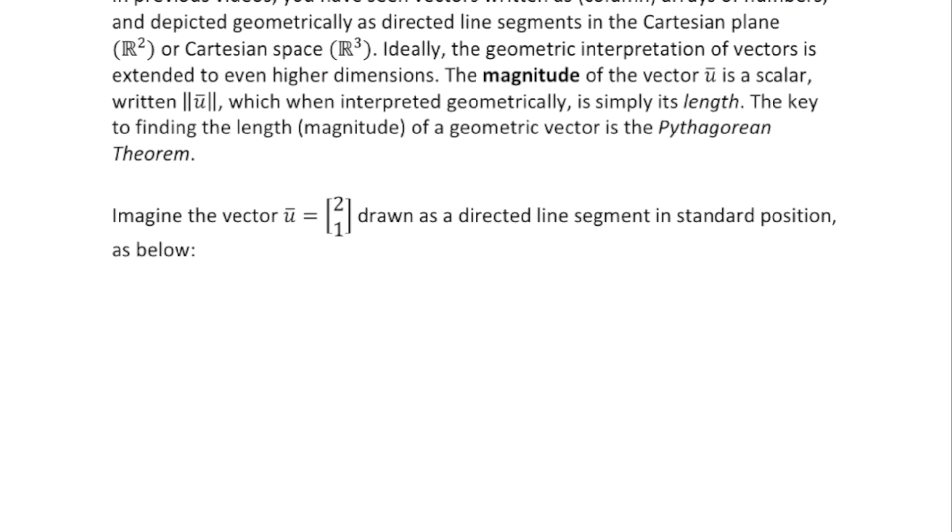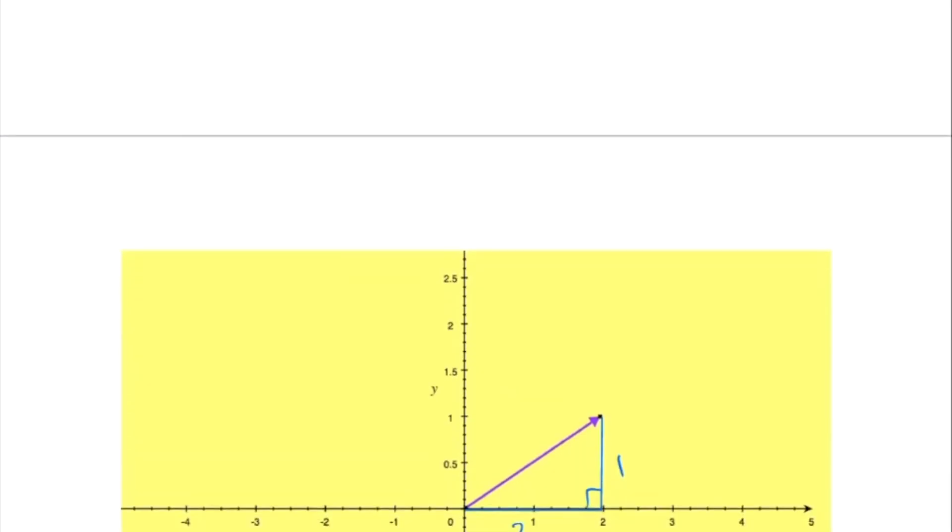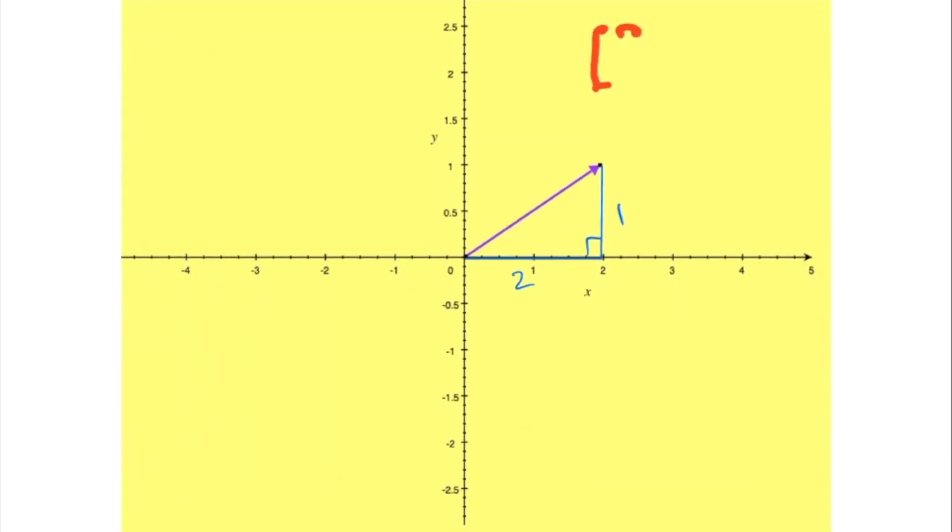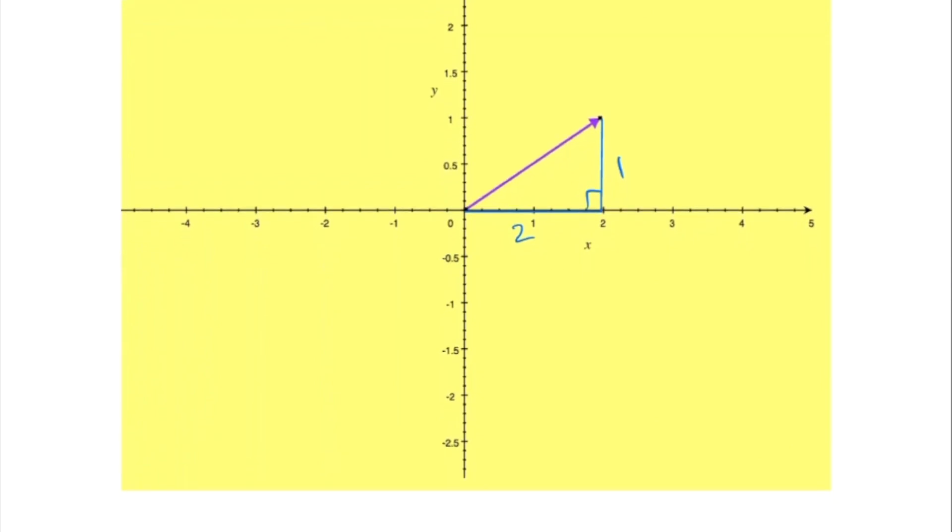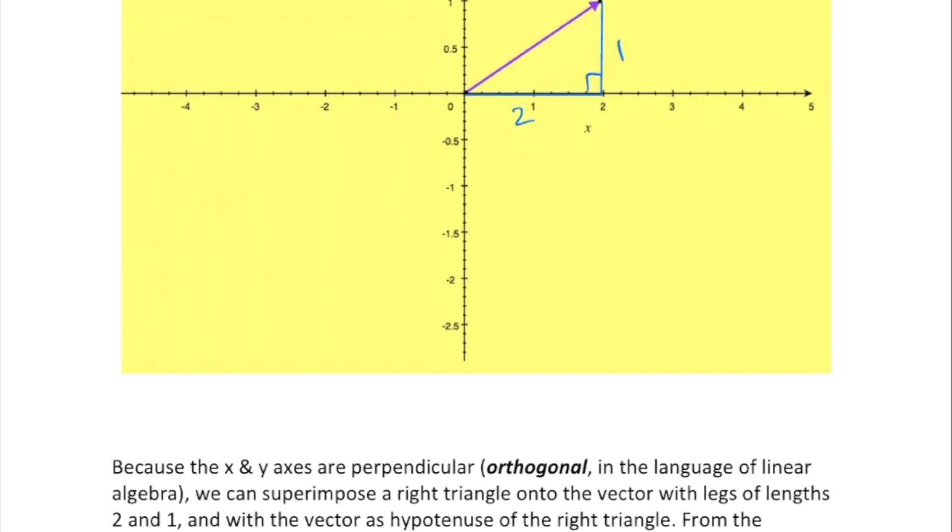Let's take an example. Suppose u is the vector [2,1]. Imagine it drawn as a directed line segment in standard position. This means two units in the x direction, one unit in the y direction. Because the x and y axes are orthogonal, we can actually superimpose upon this vector a right triangle.